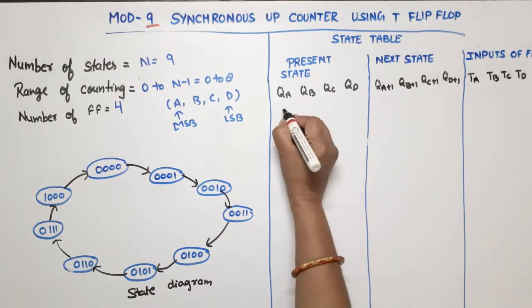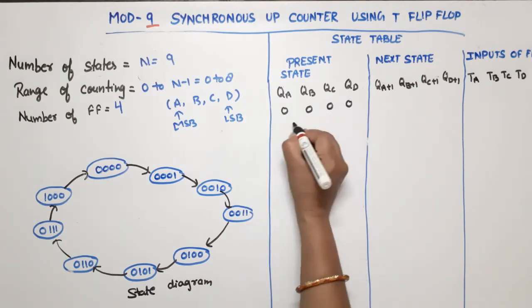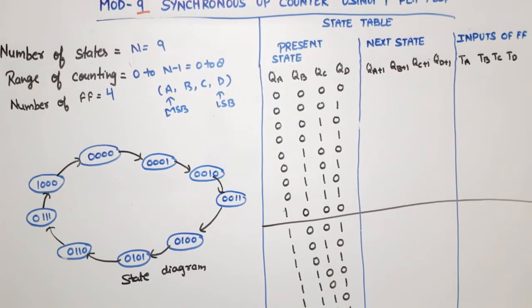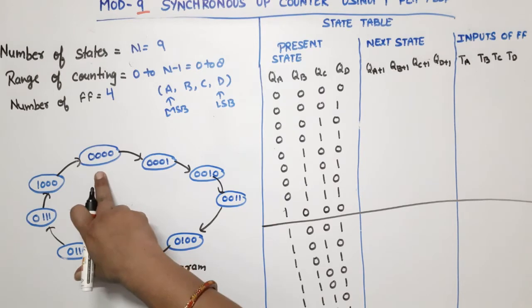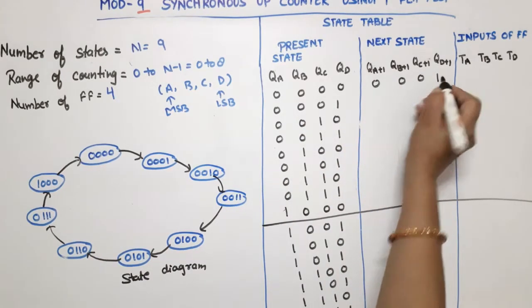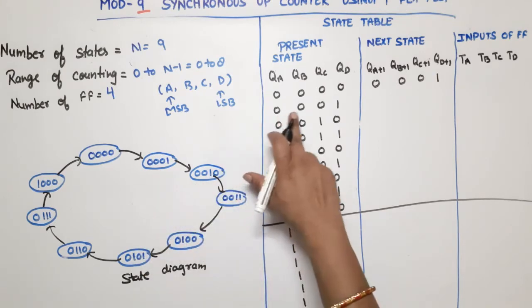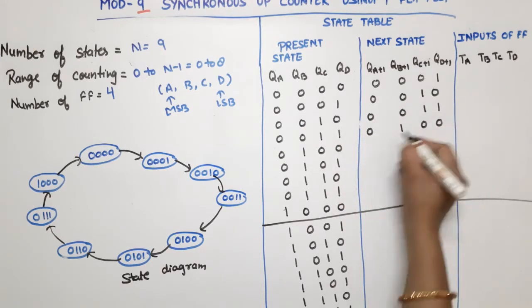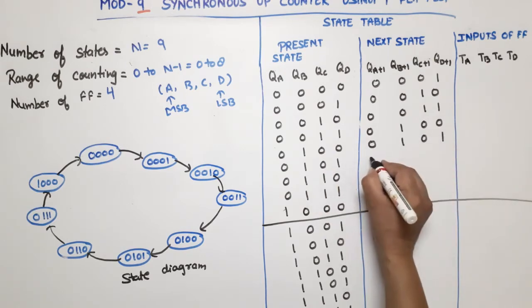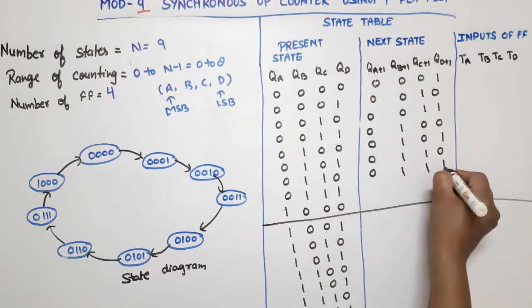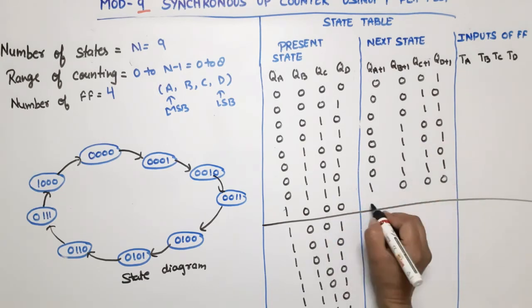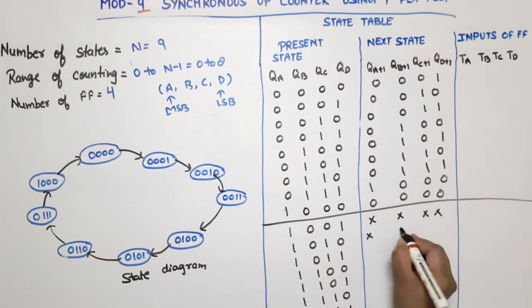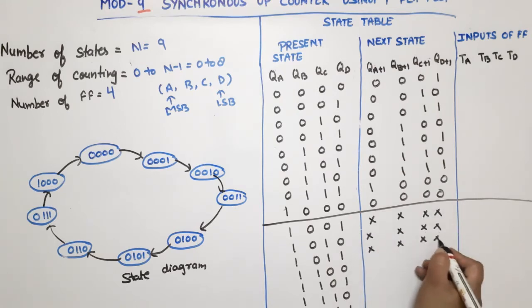Now I will take all possible states here. For 4 bits, I will list all 16 combinations. According to the state table: present state 0, next state is 1 (0001); present state 1, next state is 2; state 2 goes to 3; 3 to 4; 4 to 5; 5 to 6; 6 to 7; 7 to 8; and 8 goes back to 0. The remaining unused states (9 through 15) are don't-care conditions.